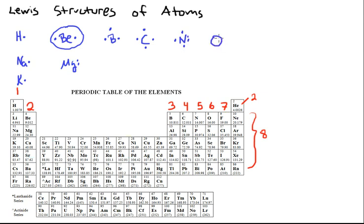Oxygen has six valence electrons, 1, 2, 3, 4, 5, 6.